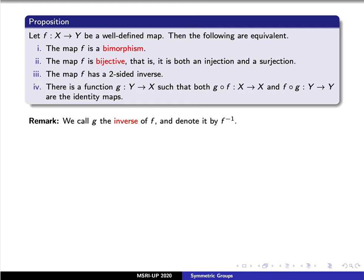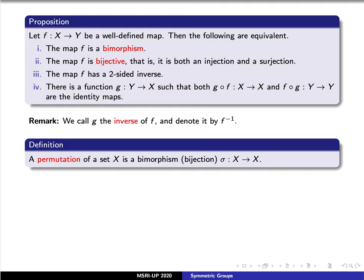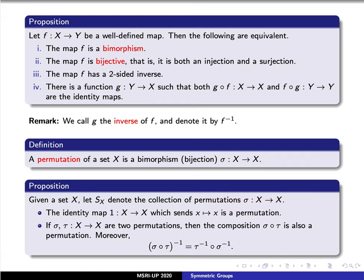A permutation of a set X is simply a bijection from X to itself — that is, it is in the collection of all functions that have a two-sided inverse. We'll denote S_X as the collection of all such permutations. We found in a previous lesson that the identity map, the function that sends lowercase x to itself, is an example of a permutation. If sigma and tau are two permutations on our set X, then their composition is also a permutation, and we can compute its two-sided inverse: the inverse of sigma composed tau is simply tau inverse composed sigma inverse.